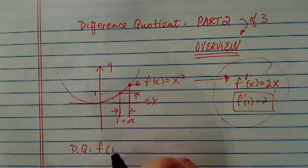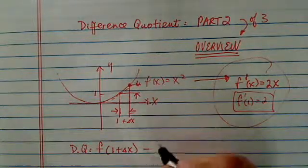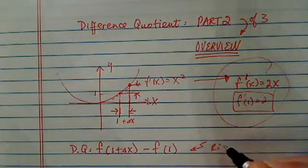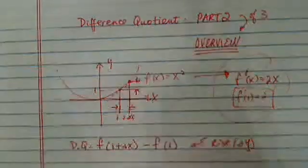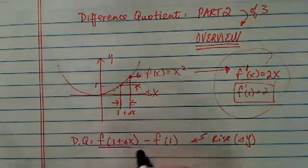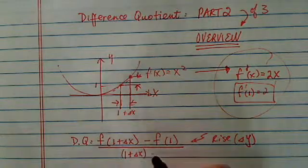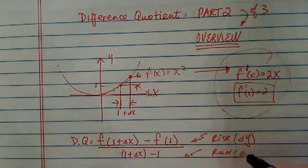So I have f of 1 plus delta x, just a little bit over 1, minus f of 1. Then this whole thing gives me rise, because it's changing y. And then from there, I need to divide by 1 plus delta x minus 1. This gives me the run, which is delta x.